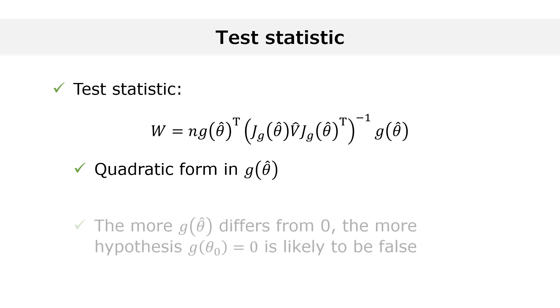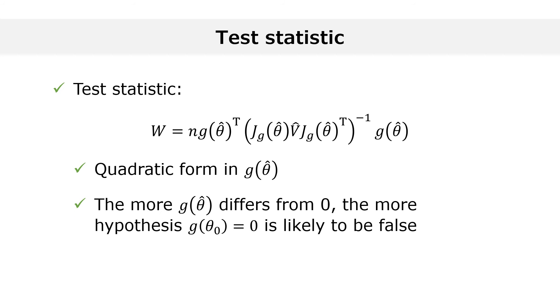The more g of theta hat is different from the zero vector, the more the tested constraint is likely to be false. The quadratic form is a measure of the distance between the zero vector and g of theta hat. In other words, the more g of theta hat differs from zero, the larger the Wald test statistic W is.